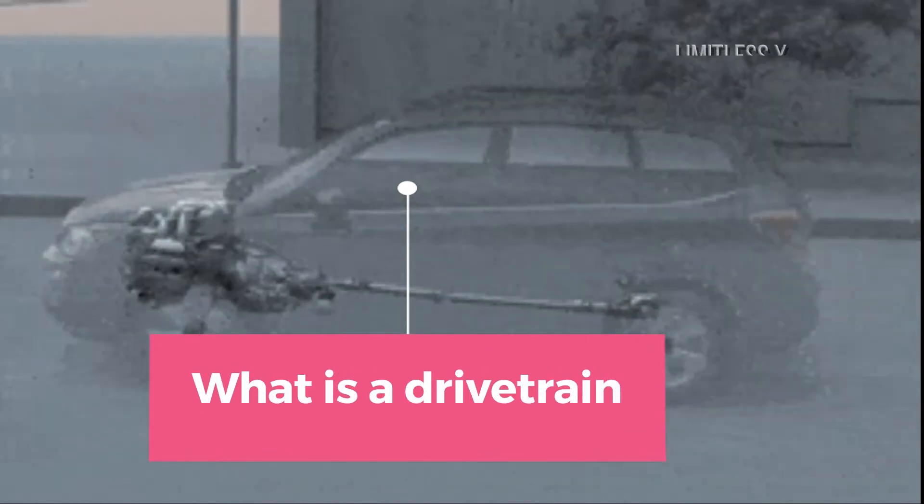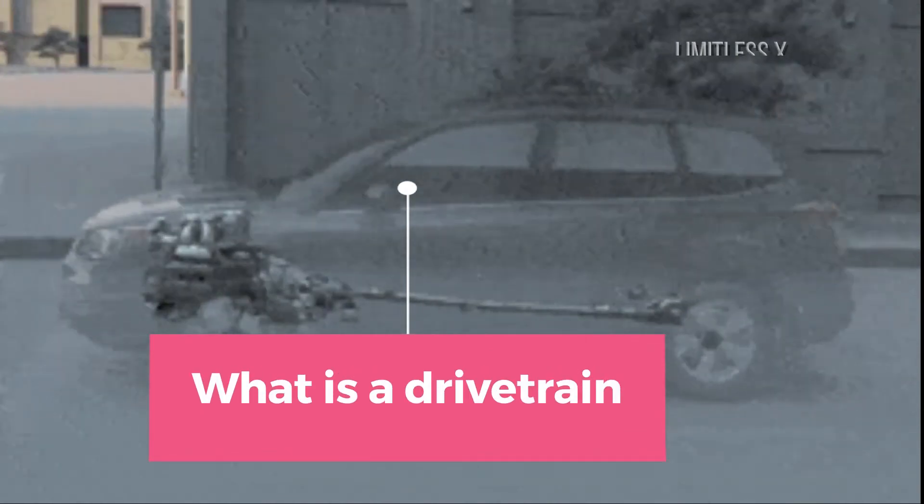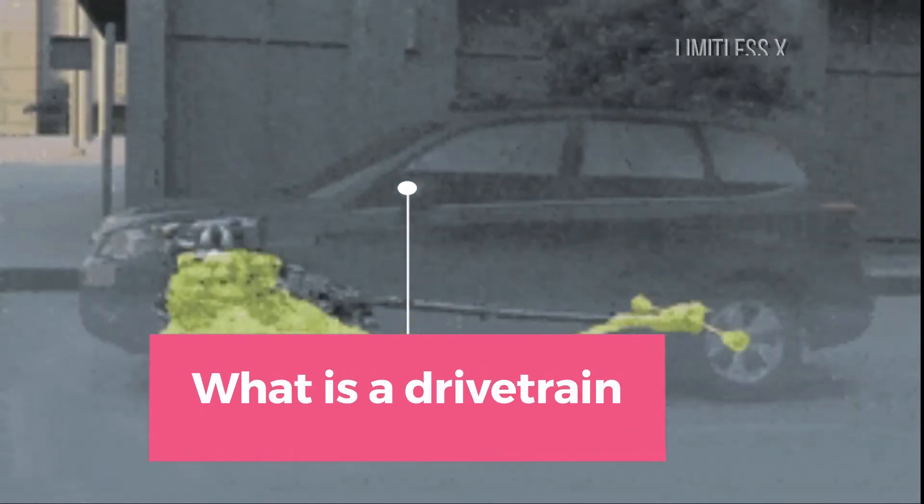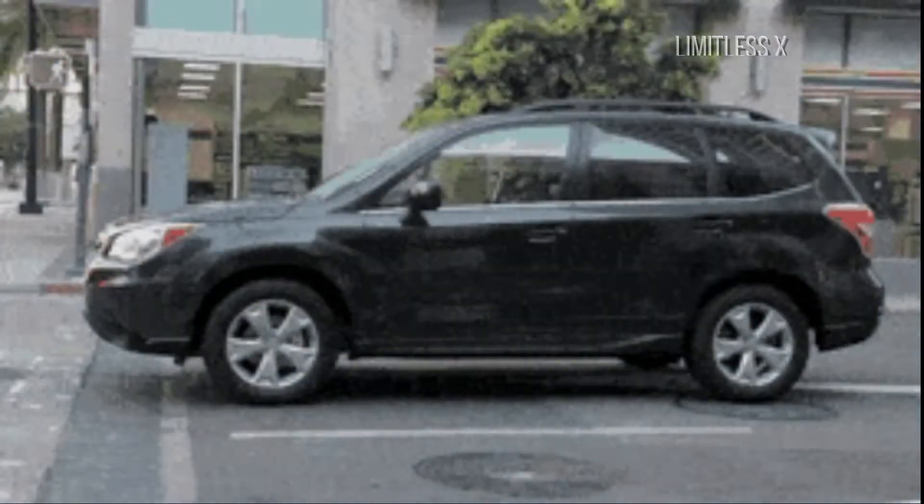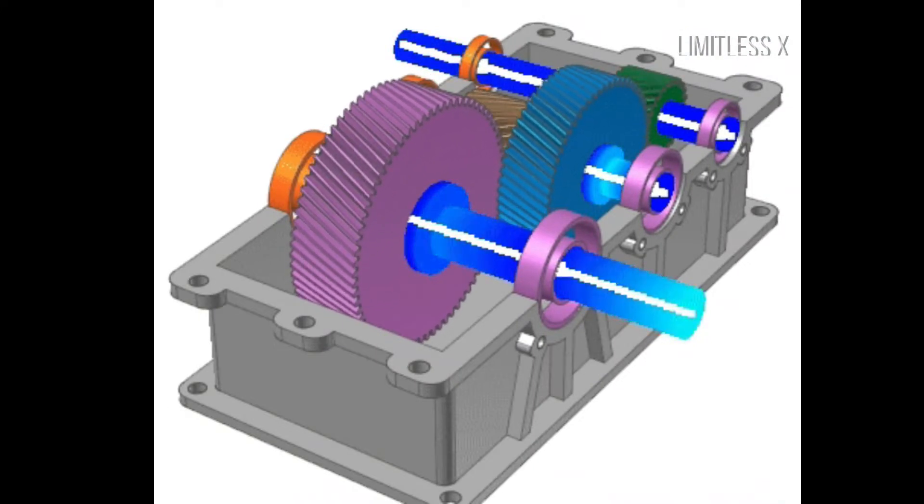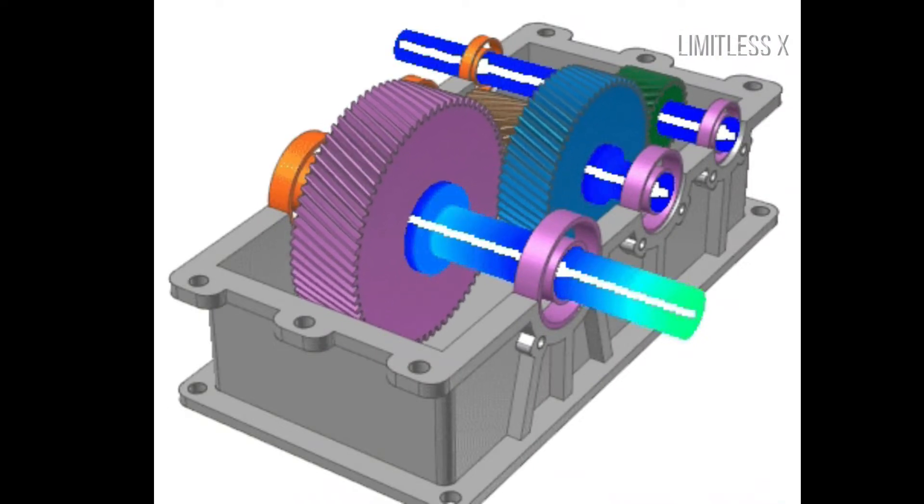What is a drivetrain? Excluding the engine, the mechanism that supplies power to the driving wheels is known as the drivetrain. Based on the utility of a vehicle, its drivetrain can be designed to send power to either one set of wheels or all four wheels.